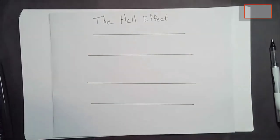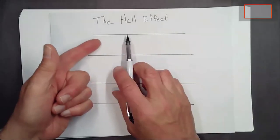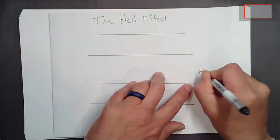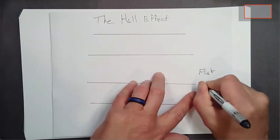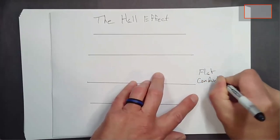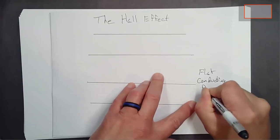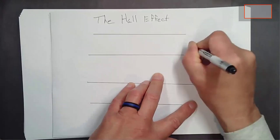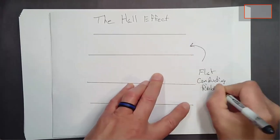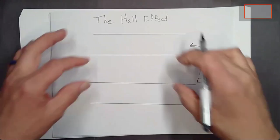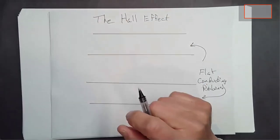This is the Hall effect. Imagine that these two things are flat conducting ribbons. Here's one flat conducting ribbon, and here's another flat conducting ribbon.